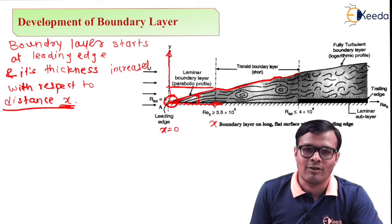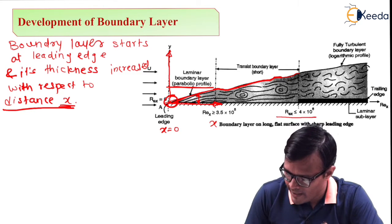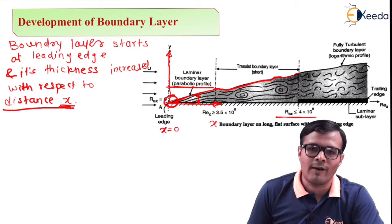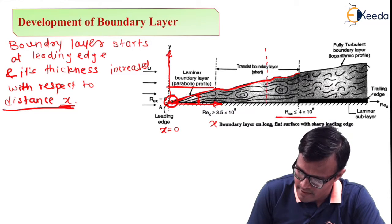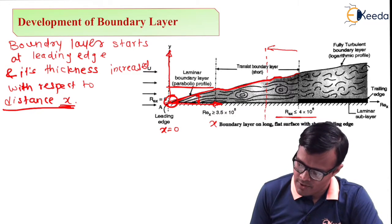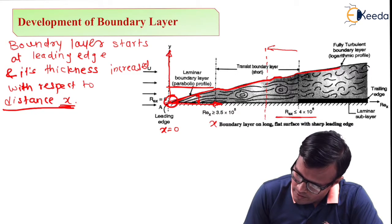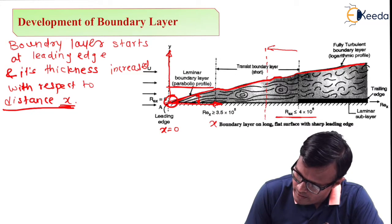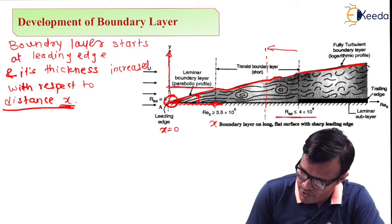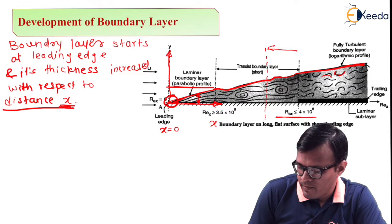Further, Reynolds number increases to a certain value. Here it is 4 into 10 raised to 6, but the limiting value is 5 into 10 raised to 5. After this zone, actual turbulent zone starts. This profile is logarithmic in which these lines indicate turbulences in the boundary layer.